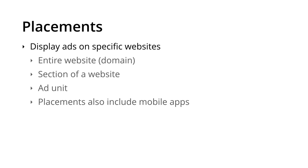Finally, there is placement targeting. This is where we choose to display our ads on specific websites. For example, we might want to target an entire website like the New York Times. Depending on the site, in some cases we can also target sections of the website — for example, comedy content on YouTube — and even individual ad units, like an ad unit on an individual page. We also have the option of targeting placements in apps.